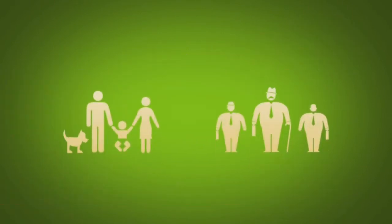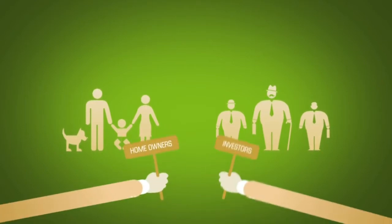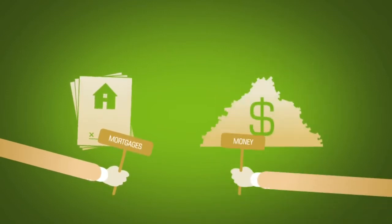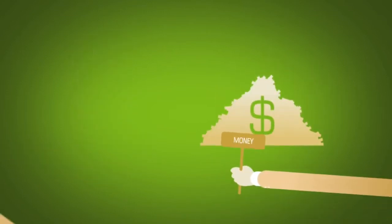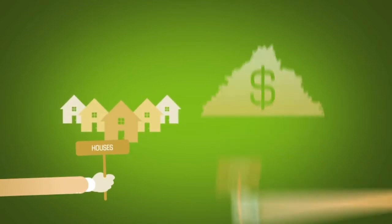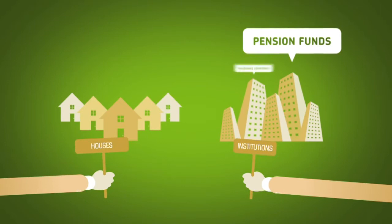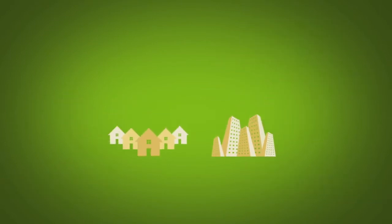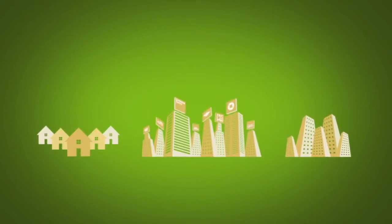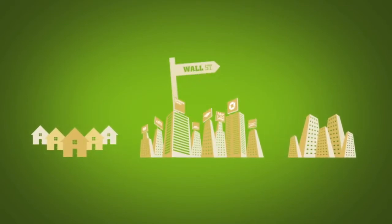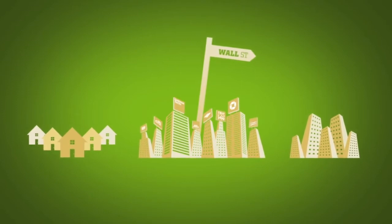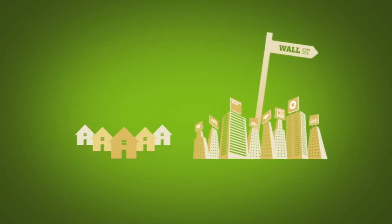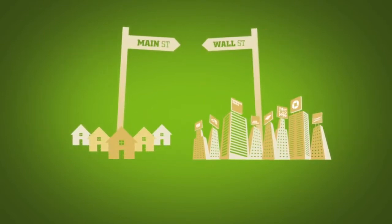The credit crisis brings two groups of people together: homeowners and investors. Homeowners represent their mortgages and investors represent their money. These mortgages represent houses, and this money represents large institutions like pension funds, insurance companies, sovereign funds, mutual funds, etc. These groups are brought together through the financial system — a bunch of banks and brokers commonly known as Wall Street. While it may not seem like it, these banks on Wall Street are closely connected to these houses on Main Street.